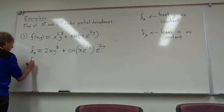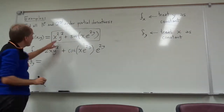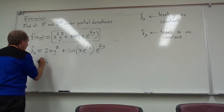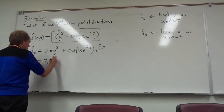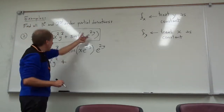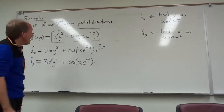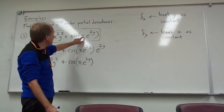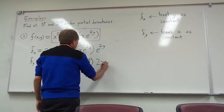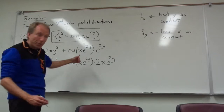Let's calculate the first partial of f with respect to y. Going back to the original function: when I differentiate with respect to y, the x squared is treated as a constant, and differentiating y cubed gives me 3y squared, so we get 3x²y². For the second term, I have the cosine of the same expression. Now differentiating with respect to y, I treat x as a constant, and I differentiate e^(2y), which gives me 2e^(2y). So I write down x times 2e^(2y).